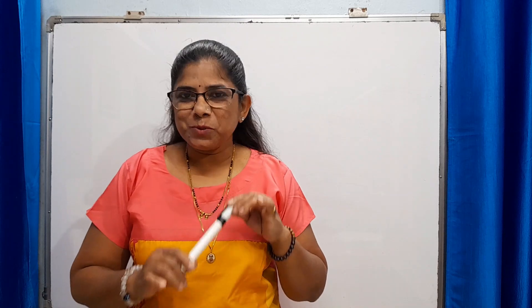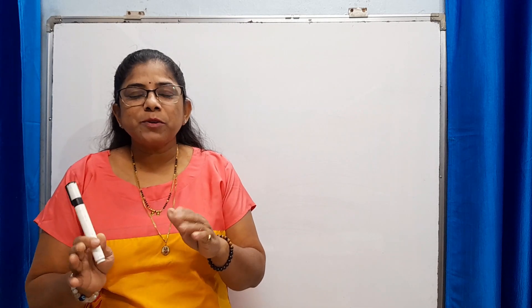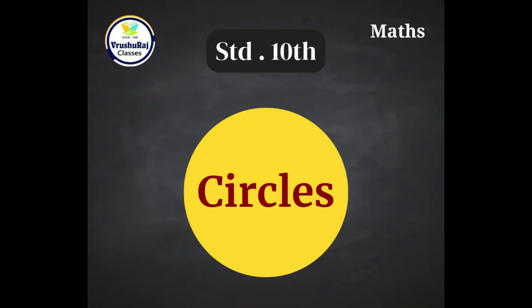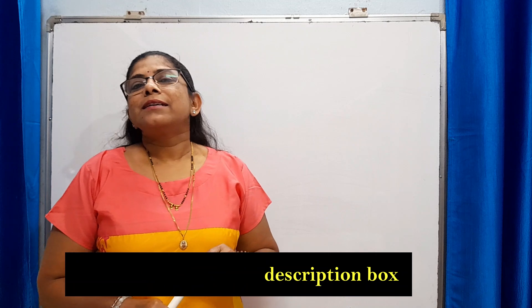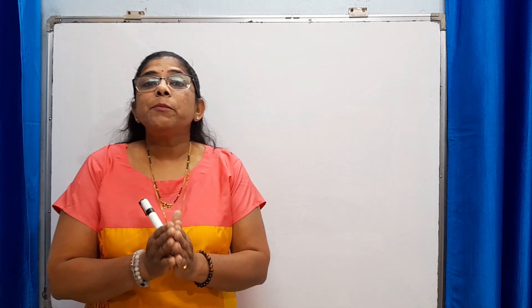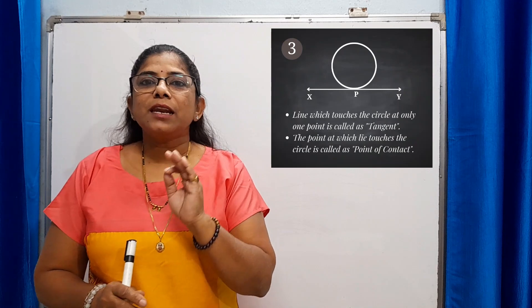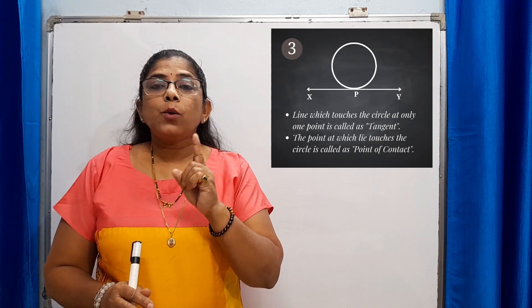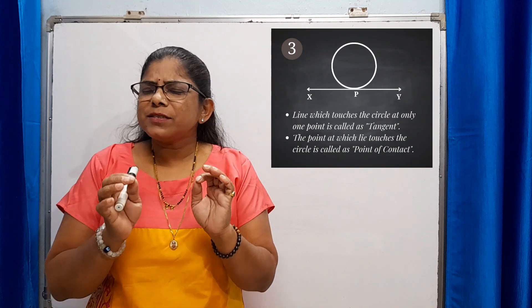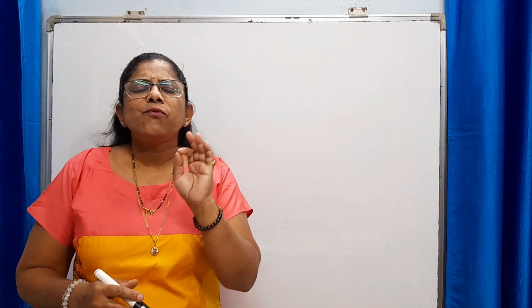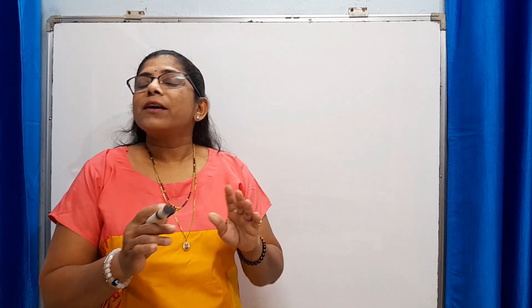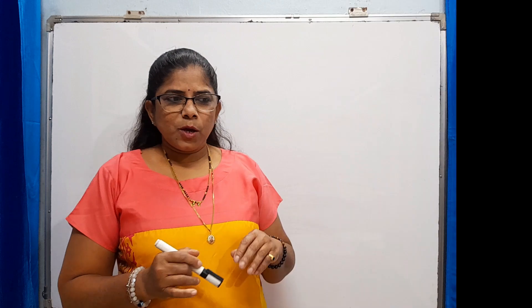Hi, welcome to Rusharaj Classes YouTube channel. We have already started the circle chapter of mathematics standard. You can check the link of the first video in our description box. This is the simplest chapter with two simple theorems. In the previous video I explained the meaning of tangent — tangent is the line which touches the circle at only one point, and the point at which the line touches the circle is called the point of contact. In this video we are going to study our first theorem.